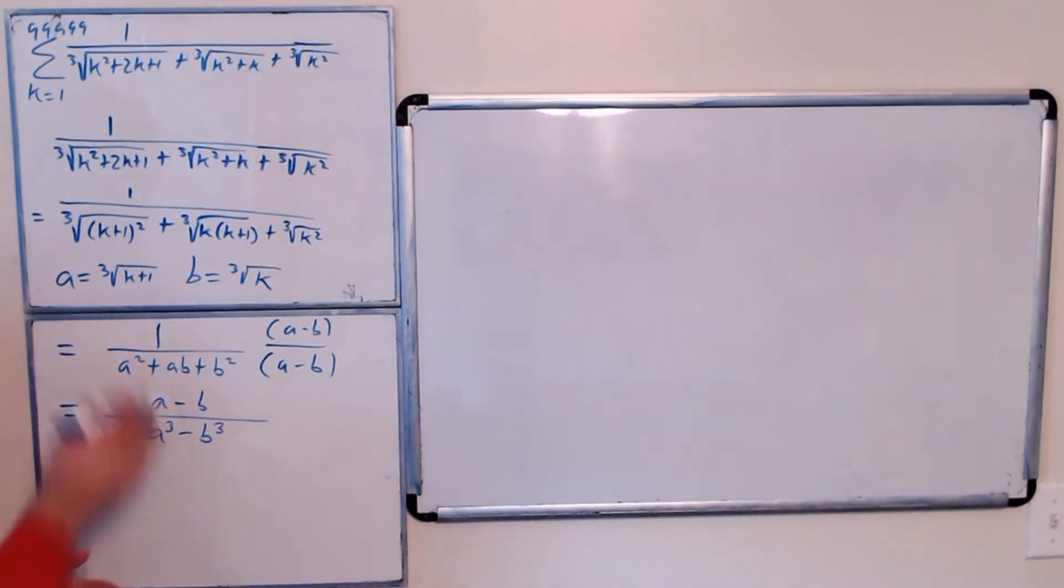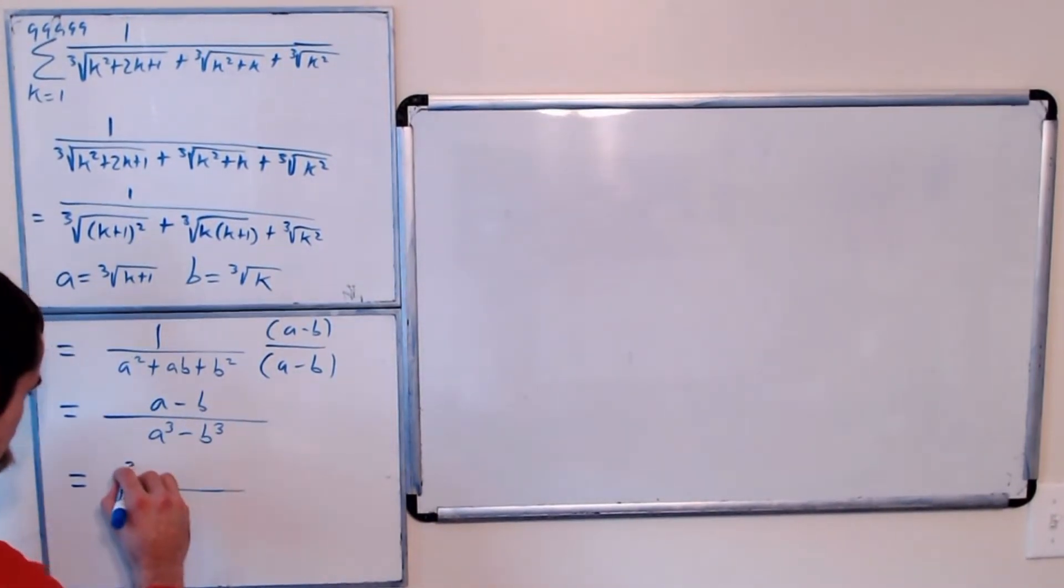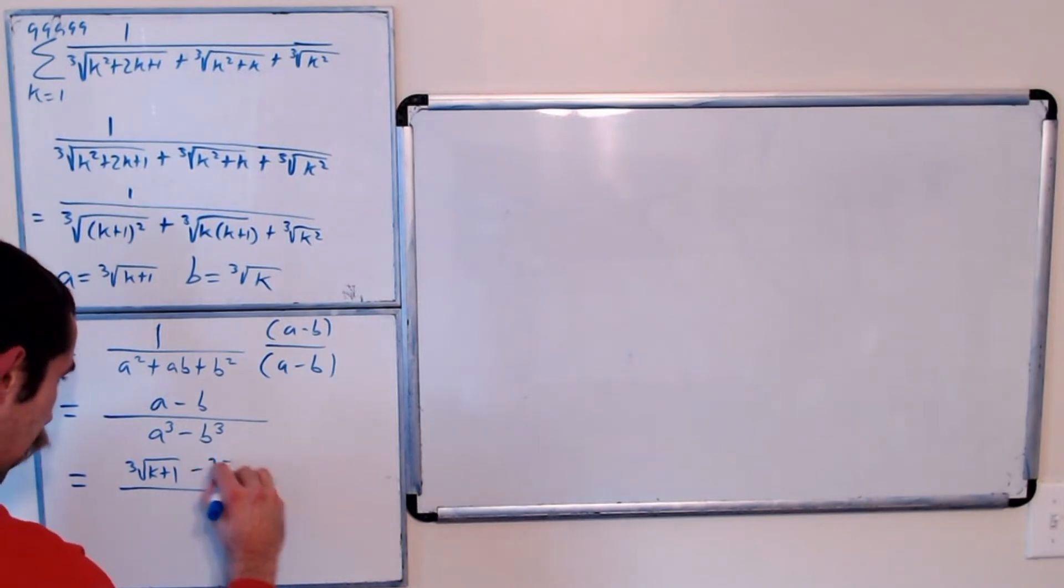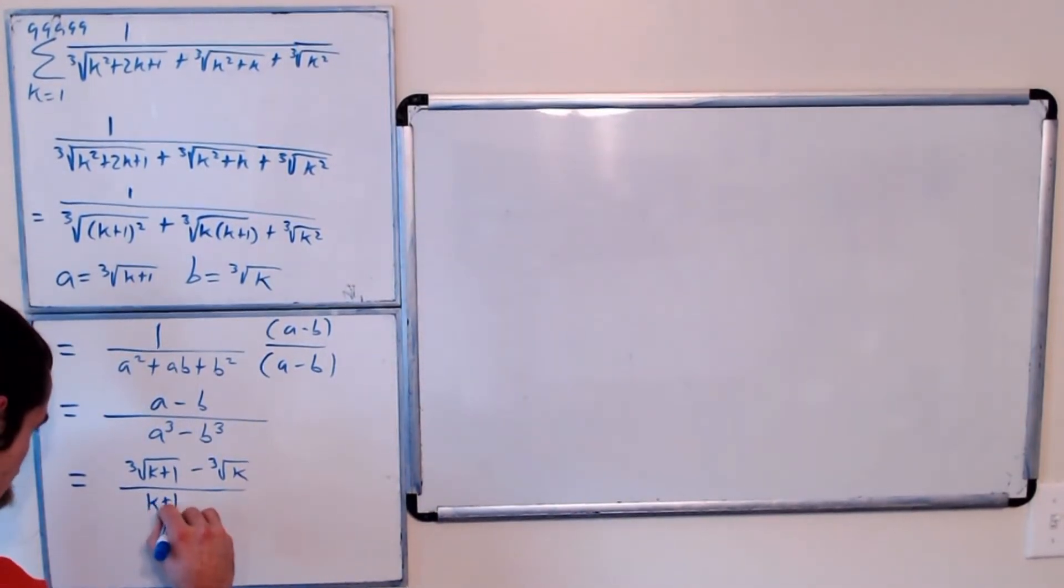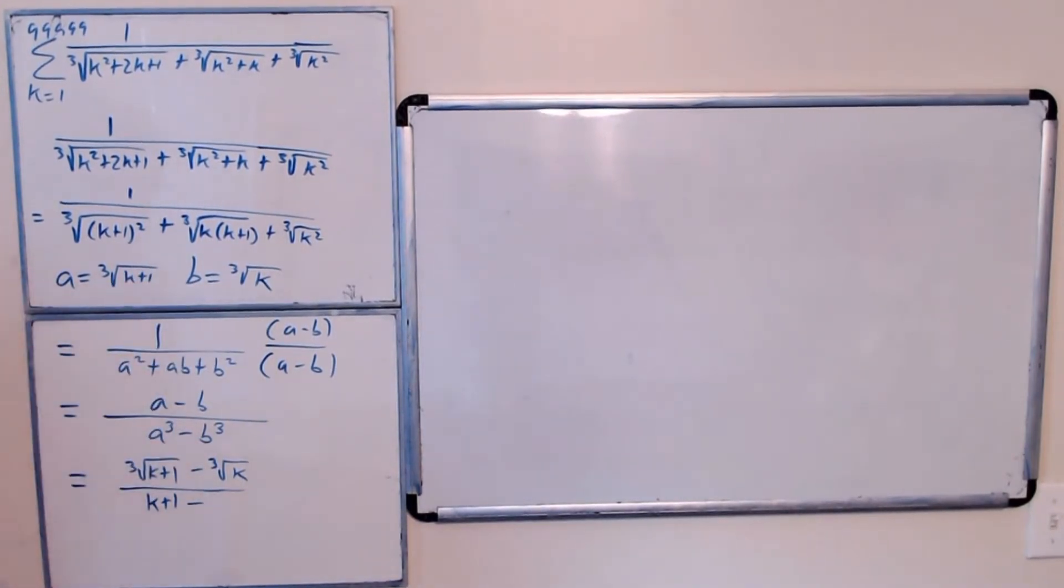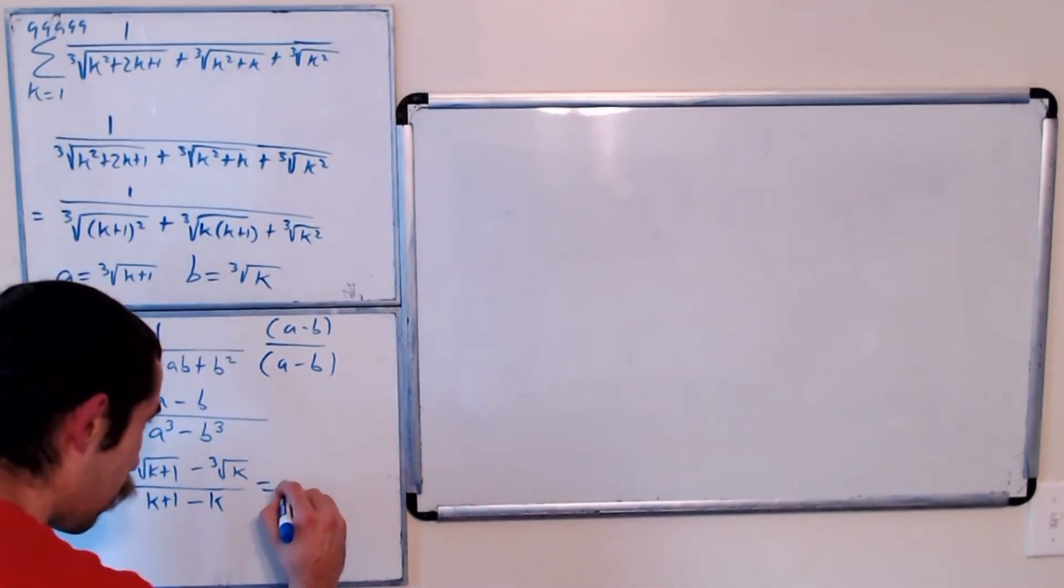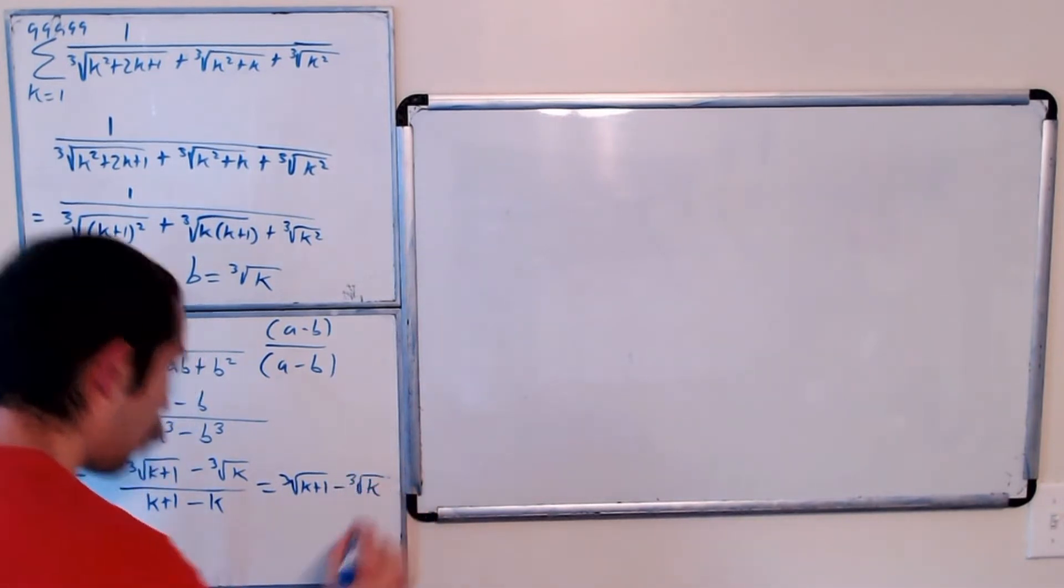And now we could substitute back in the k's. So our numerator is the cubed root of k plus 1 minus the cubed root of k. Our denominator is the cubed root of k plus 1 cubed, so that's just k plus 1 minus the cubed root of k cubed minus k. Our denominator just becomes 1. So this becomes the cubed root of k plus 1 minus the cubed root of k.